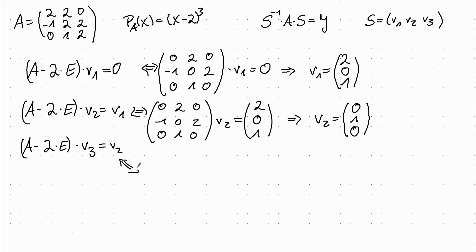So the third condition is equivalent to [0, 2, 0; minus 1, 0, 2; 0, 1, 0] times V3 is equal to V2.